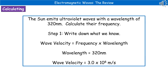They can ask you to carry out calculations to do with electromagnetic waves. The key thing is what they're not going to give you in the question. We already know from P5 that we need the wave velocity equation: frequency times wavelength. You also need to know the velocity at which electromagnetic waves travel, which is 3.0 times 10 to the power of 8 meters per second. A sample question: the sun emits ultraviolet waves with a wavelength of 320 nanometers — calculate their frequency. First, write down what you know: the equation, the wavelength of 320 nanometers, and the wave velocity of 3.0 times 10 to the 8 meters per second.